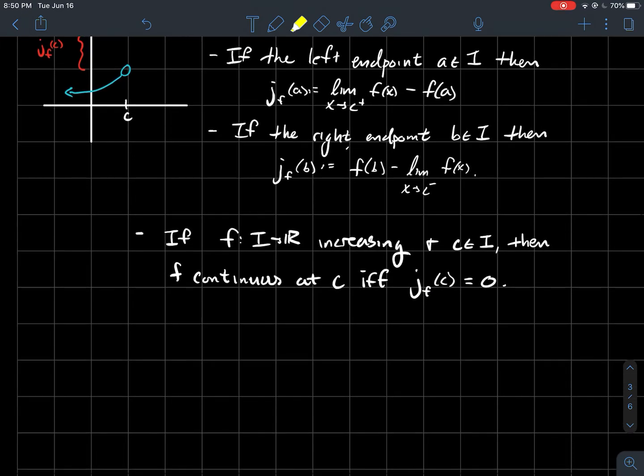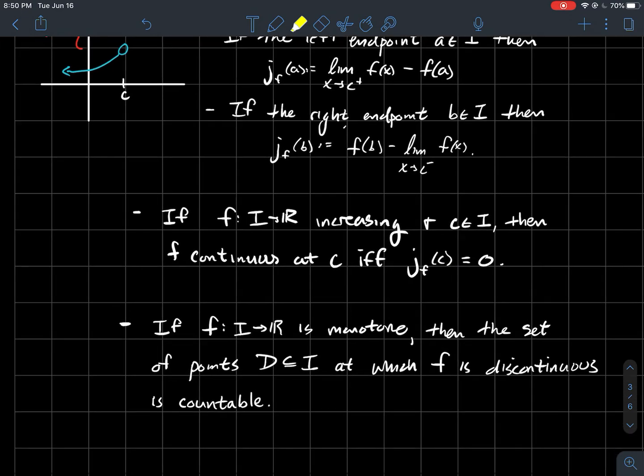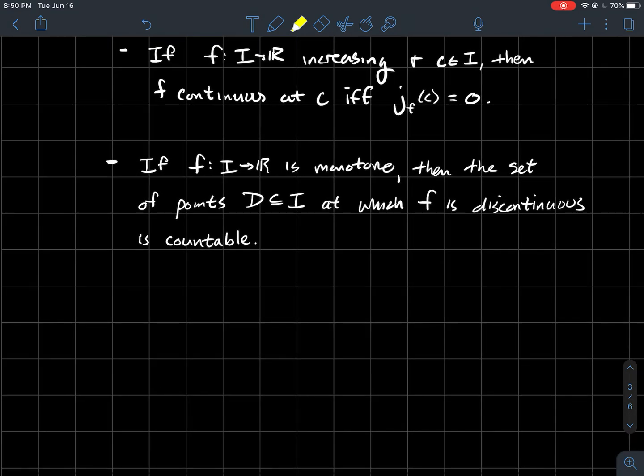So jumps are kind of cool. They can tell us about continuity. And so here's kind of a neat but tough result. So if you've got a function that's monotone, and I'm going to do a proof in a minute where I assume f is just increasing, then the set of points D that are in the domain of your function at which your function is discontinuous has to be countable. So it can't be uncountable. So if you had an interval of real numbers and you had a function that's increasing on it, then it's not possible for f to be discontinuous at every single point inside of that interval.